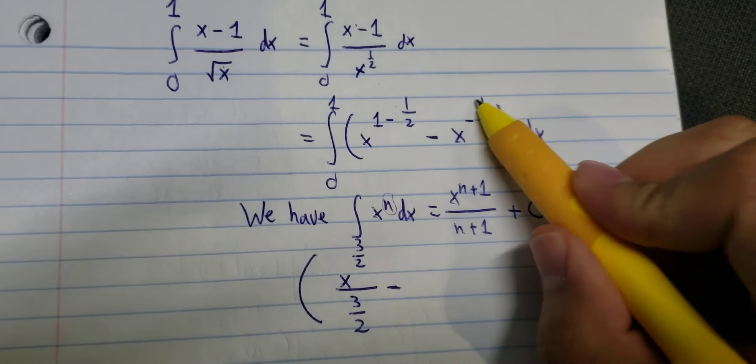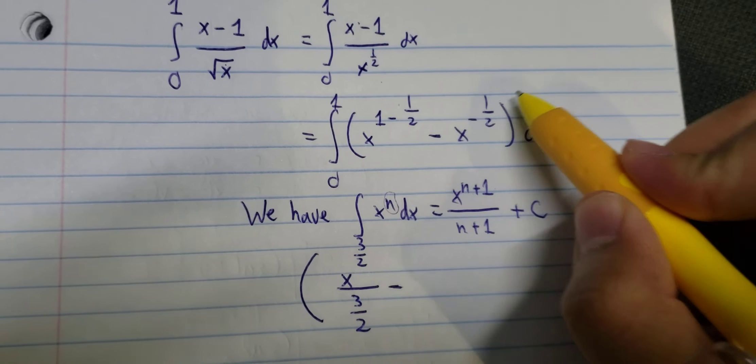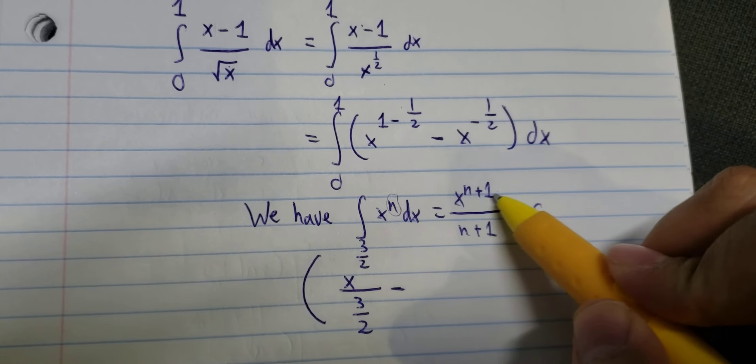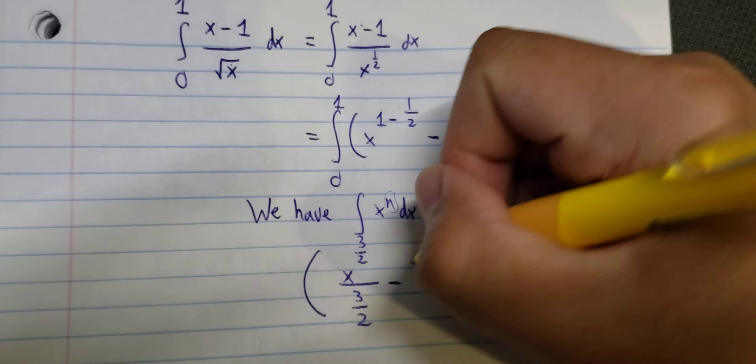Negative one over two, I will put in here. So negative one over two plus one, we have positive one over two.